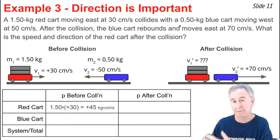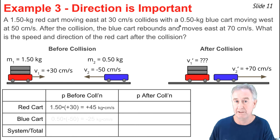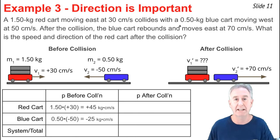For the red cart, it's mass times velocity, 1.5 times 30, and that comes out to be 45 units of momentum. For the blue cart, it ends up being 0.5 times negative 50. That comes out to be negative 25.